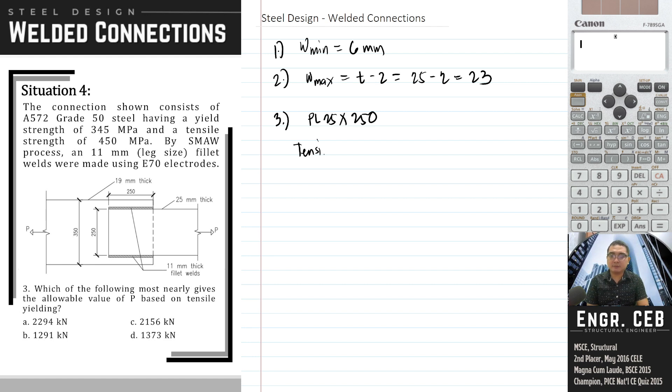For tensile yielding, we have Pn equals Fy times Ag equals 345 times the gross area of 25 by 250. The nominal strength based on tensile yielding is 2156.25 kN.